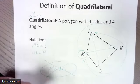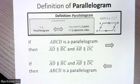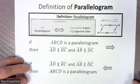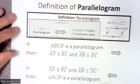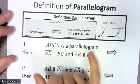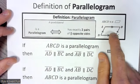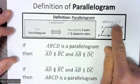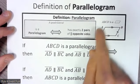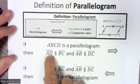Now we have our definition of a parallelogram. A parallelogram is a special type of quadrilateral — a four-sided figure with four angles. It is a parallelogram if and only if it has exactly two pairs of parallel opposite sides. This symbol right here — a tiny little parallelogram — means parallelogram. So we see two sets of opposite parallel sides.